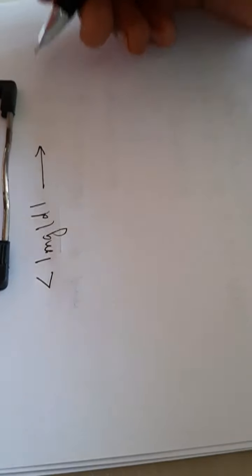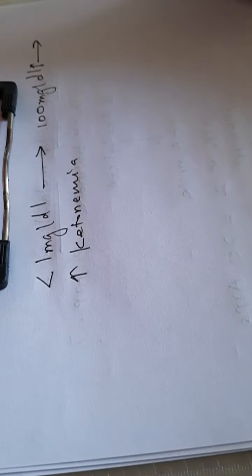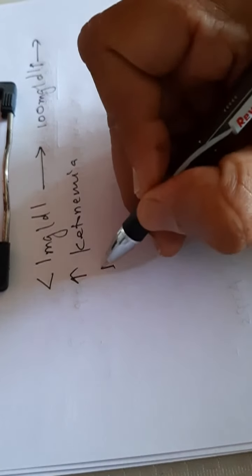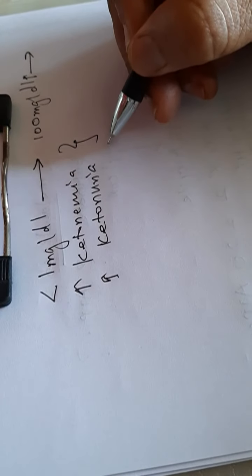Now coming to the next topic - diabetic ketoacidosis. What is ketosis? We have seen how ketone bodies are formed and the normal concentration of ketone bodies in the blood is less than one milligram per deciliter. When this concentration increases above one milligram - generally more than 100 or 200 milligrams depending on the clinical condition - this is called ketonemia. Because of the increase in ketone bodies in the blood, there is excretion of ketone bodies in the urine, called ketonuria. These two conditions together are called ketosis.